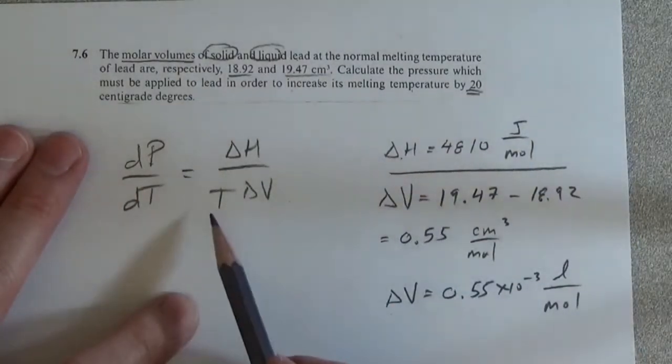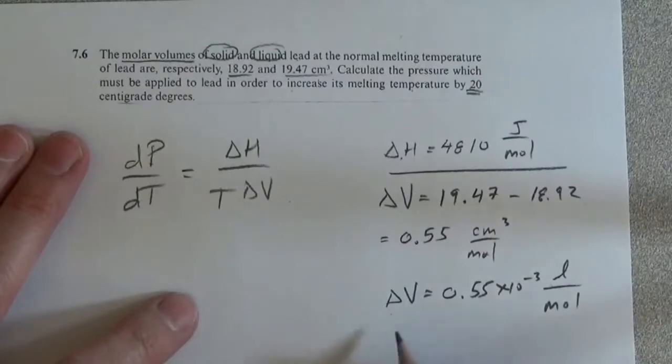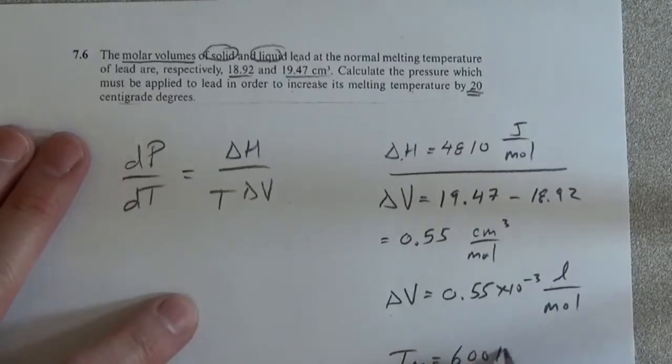So delta V, delta H, and the melting temperature of lead is 600K.